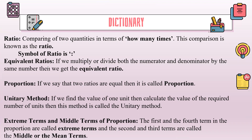Equivalent ratios: if we multiply or divide both the numerator and denominator by the same number, then we get the equivalent ratio. Proportion: if we say that two ratios are equal, then it is called proportion.